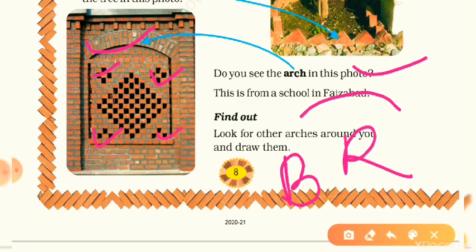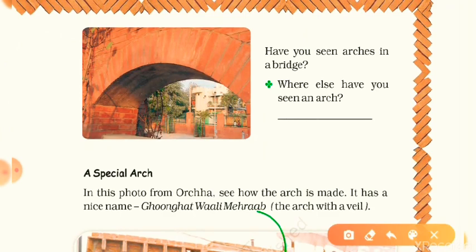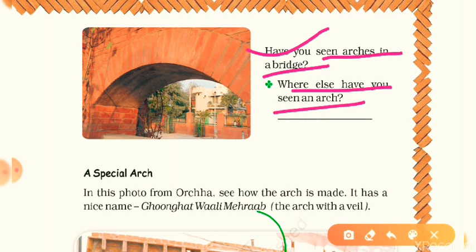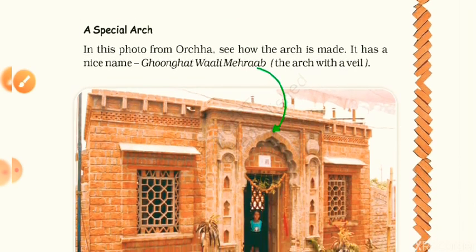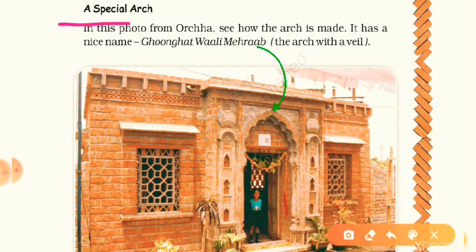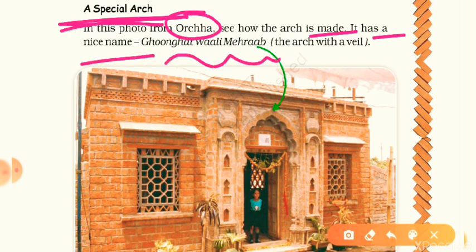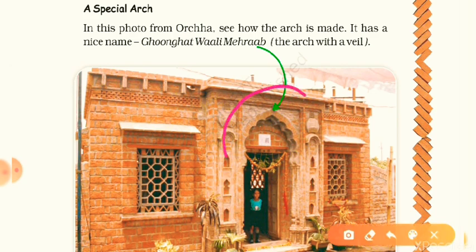In this photo you have arc patterns and also jali patterns. Have you seen arcs in a bridge? We have seen arcs in rainbows and bridges. Above the road we have a bridge whose shape is like an arc. Now here is a special arc — see how this arc is made. It has a nice name: ghunghat wali mehra, meaning 'the arc with a veil.' This is a special arc named ghunghat wali mehra.